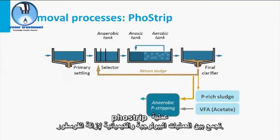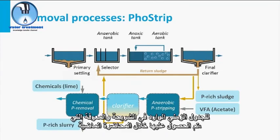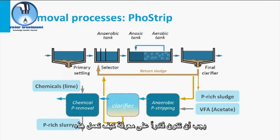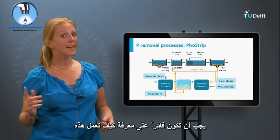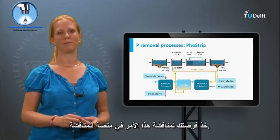The Phostrip process combines biological and chemical processes for phosphorus removal. With the diagram given in this slide, and the knowledge obtained during the past lecture, you should be able to figure out how this works. Take your chance to discuss this at the discussion platform, if you are interested in the Q&A forum.